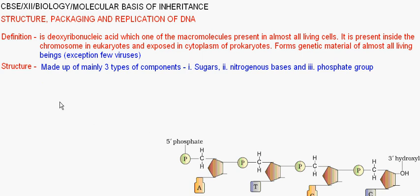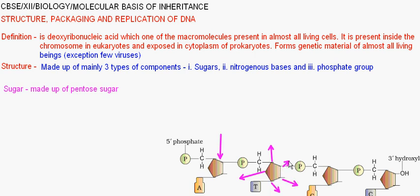First component: Sugar. DNA is made up of pentose sugar. Pentose sugar is a sugar that has five carbons — as you can see: one, two, three, four, and five. That's why it's called pentose sugar. In case of DNA, it has an OH group, that is a hydroxyl group, at the three prime end.